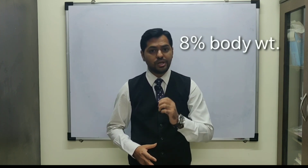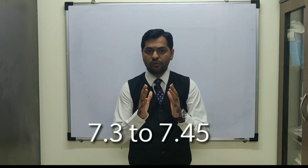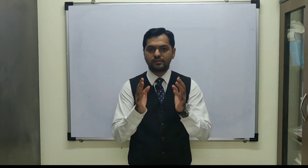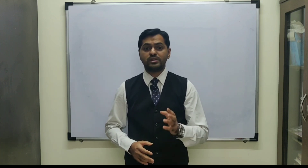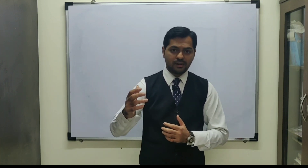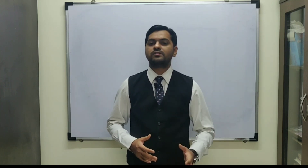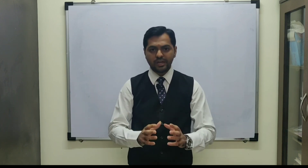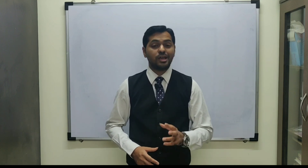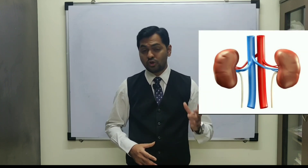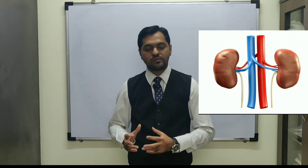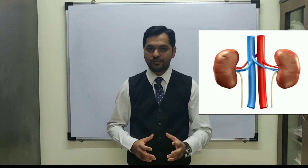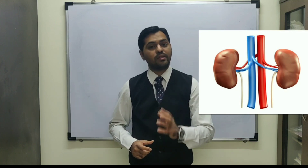The pH of blood is very important. It is between 7.3 to 7.45, usually around 7.4, which is an alkaline pH. This narrow range must be maintained — a pH above that can cause alkalosis, and a pH below that will result in acidosis. Both conditions can result in the death of the patient.